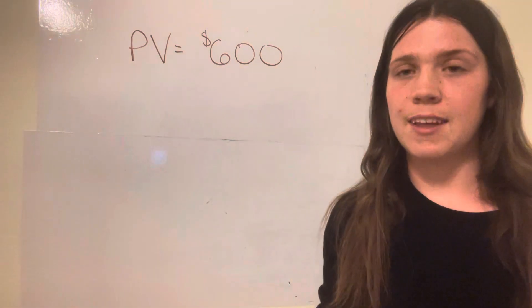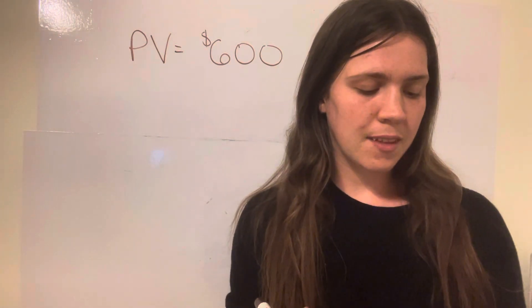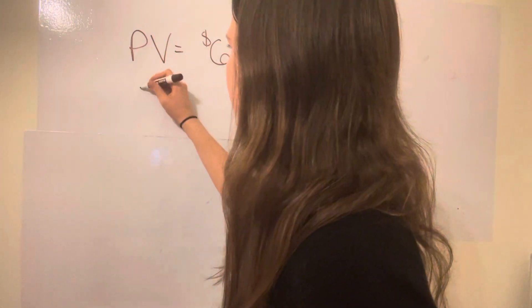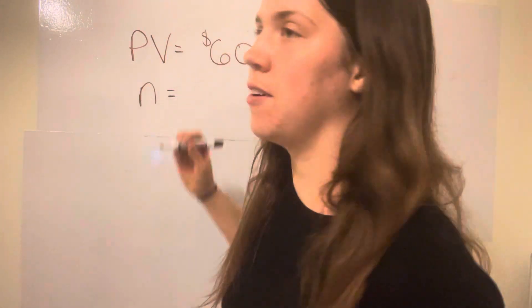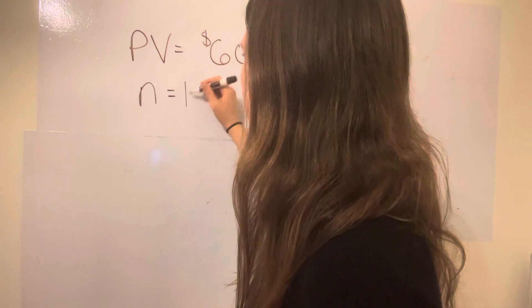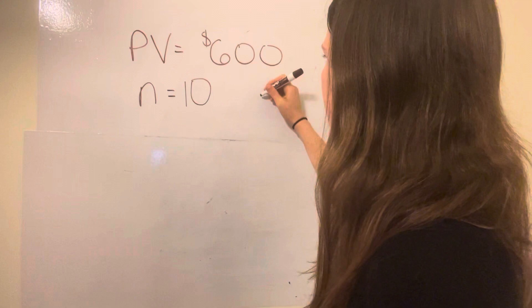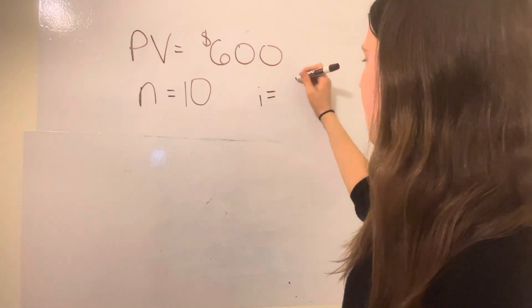We've also been told that the period of time, which is n, is going to be over 10 years. We know that we have an interest rate of 5%, so i is going to equal 5%.